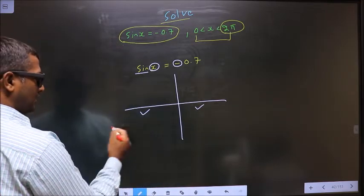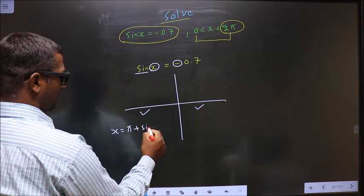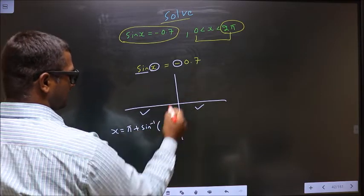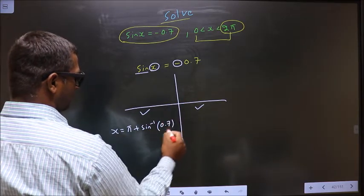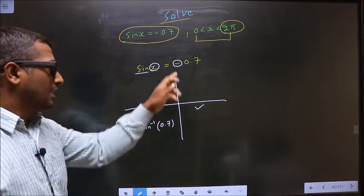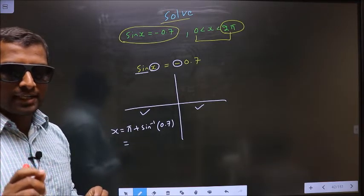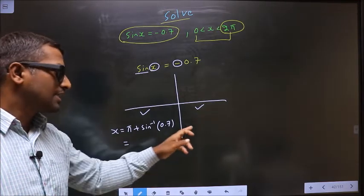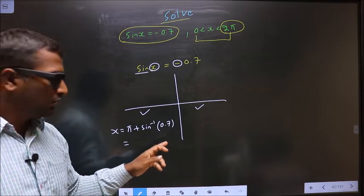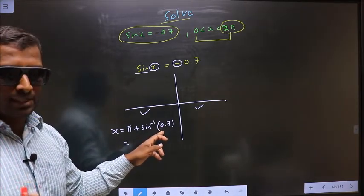To get an angle in the third, we should do π plus sin inverse 0.7. Remember this negative sign is used only for selecting the quadrants. Once quadrants are selected, do not place negative sign here again. Remember that.